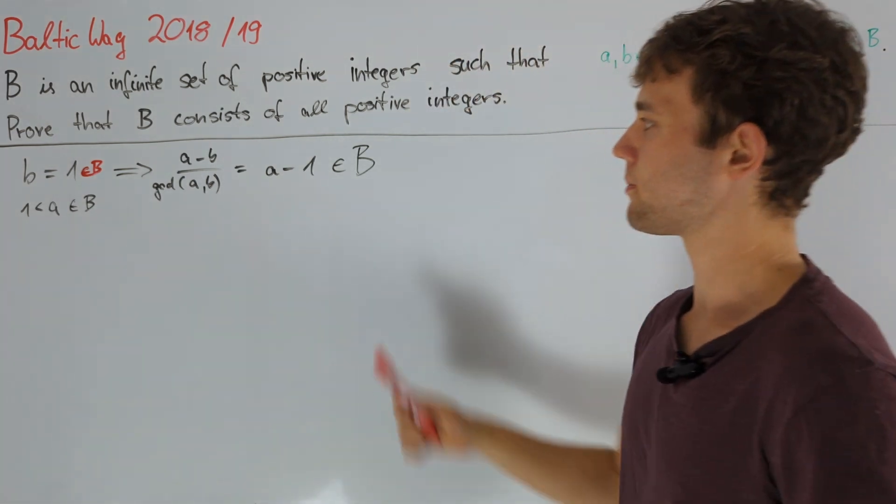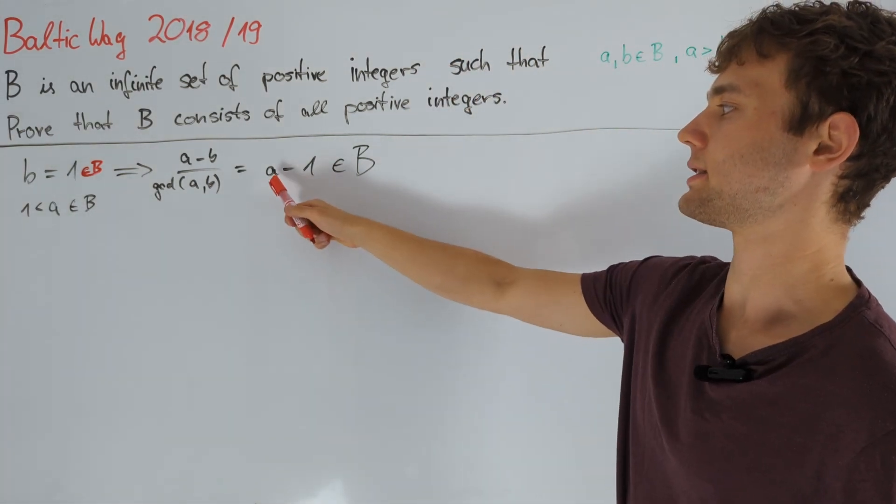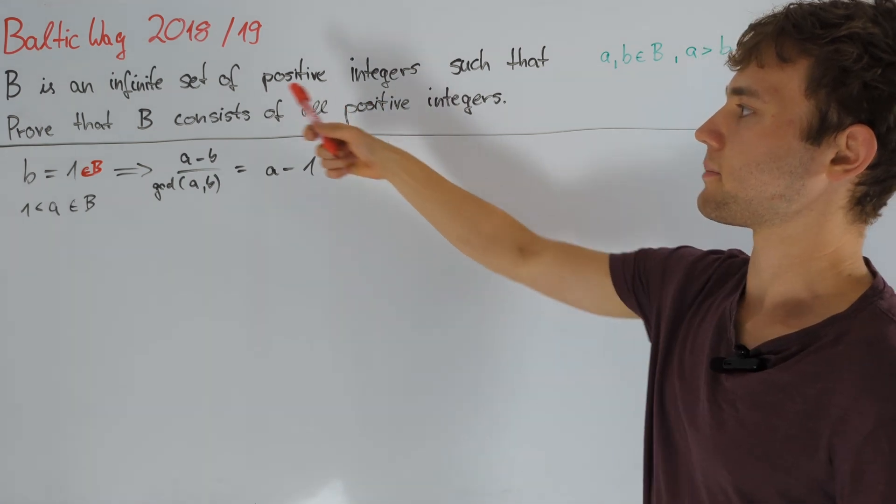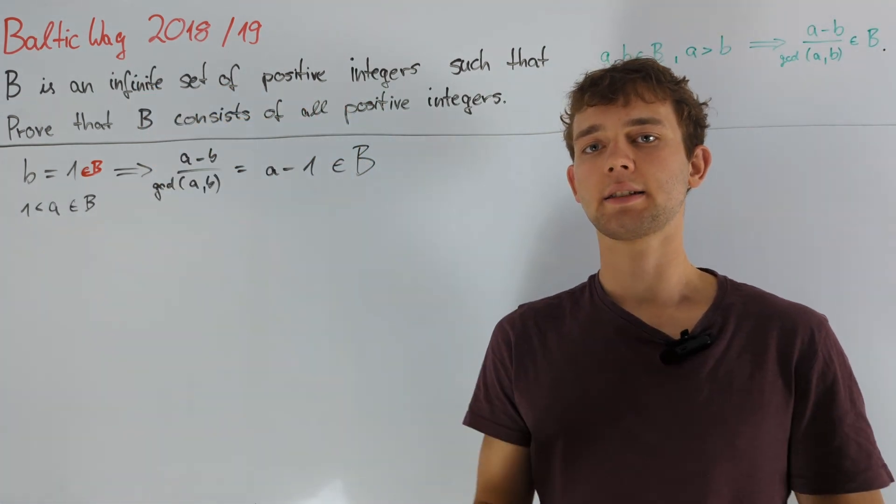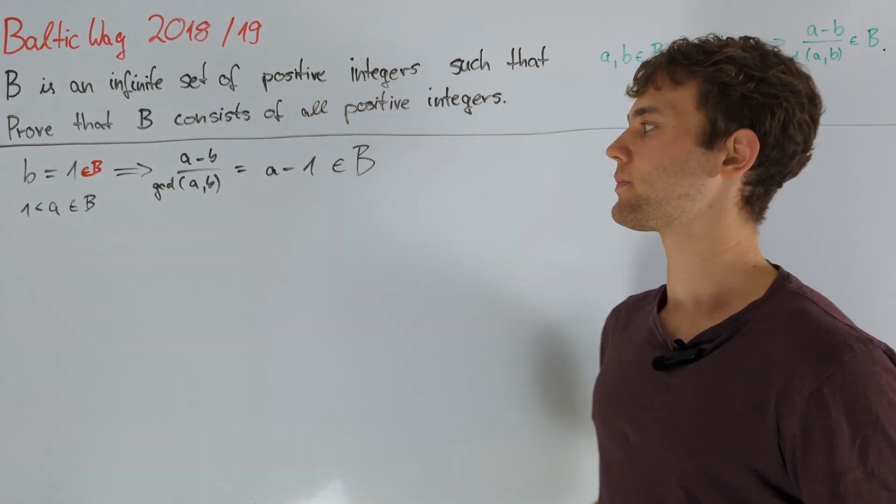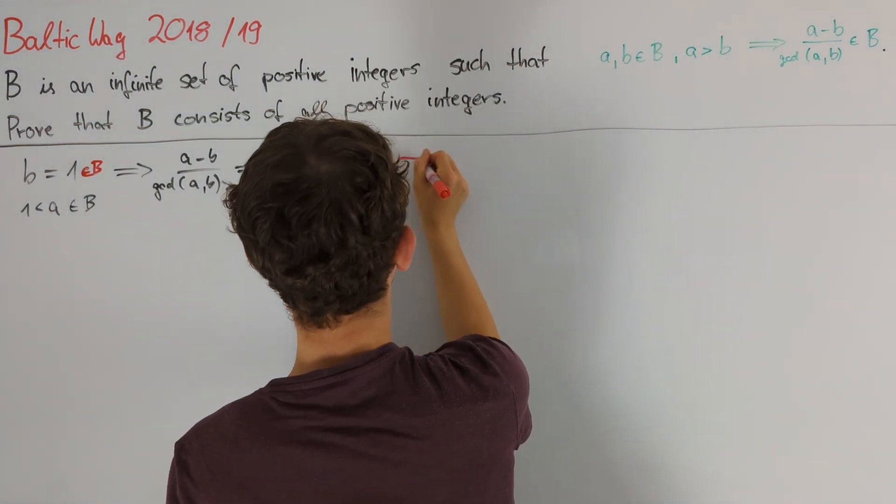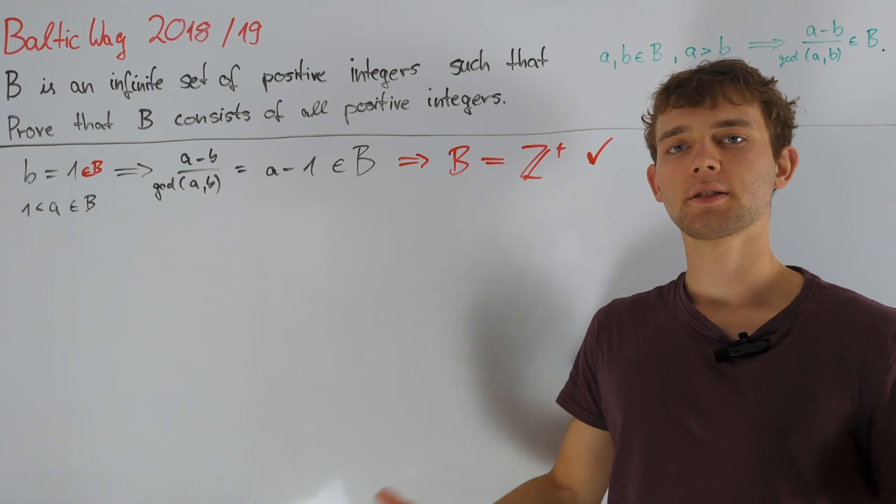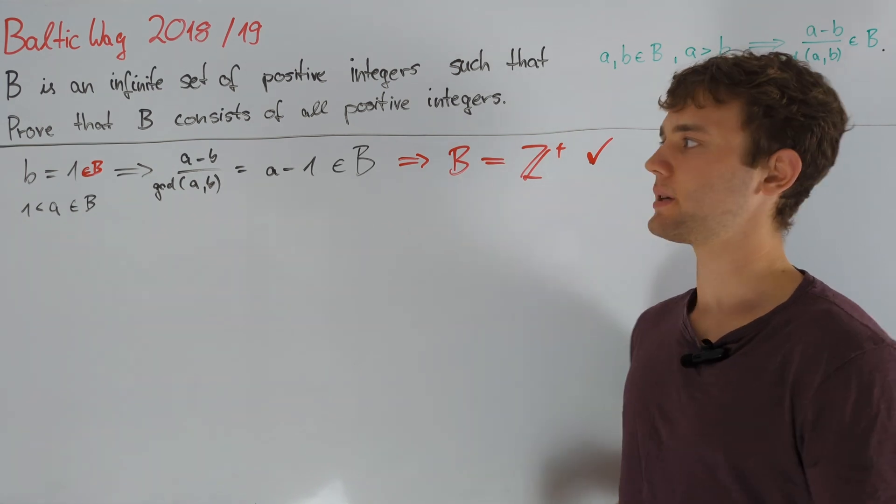Hence, by induction, B must contain all numbers less than or equal to a. Now, we also know by the condition that B is infinite, that it contains infinitely large numbers, and hence we can conclude that B must be equal to the set of positive integers. So, we only need to prove that 1 is in B, and then by this argument we are done.